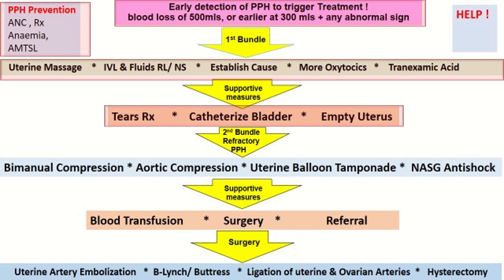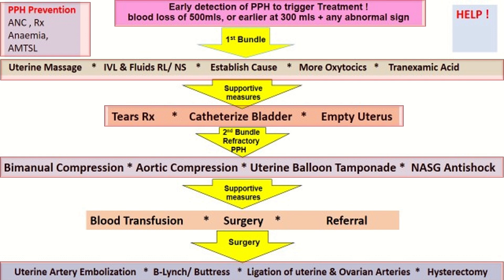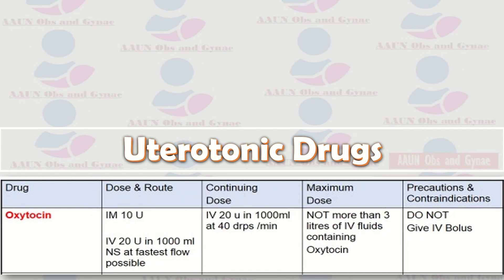Supportive measures include treatment of tears, catheterization of the bladder, and emptying of the uterus. For refractory PPH, the second bundle includes bimanual compression, aortic compression, uterine balloon tamponade, and non-pneumatic anti-shock garment. Further supportive measures include blood transfusion, surgery, and referral. Surgical measures include uterine artery embolization, B-Lynch suture, ligation of uterine and ovarian arteries, and hysterectomy.